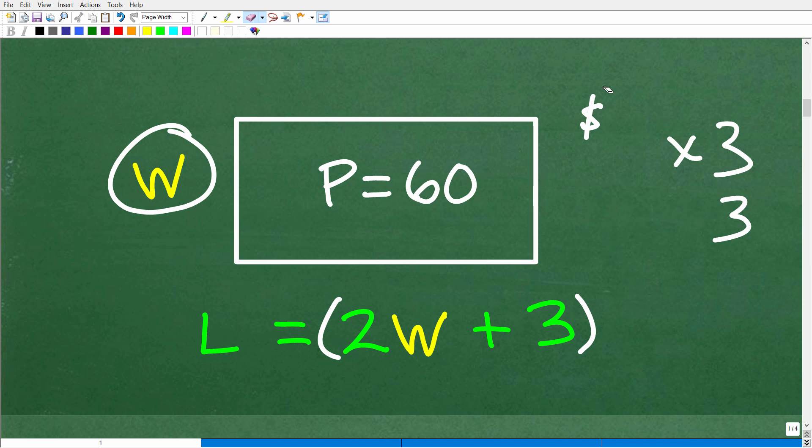Hopefully this makes sense. Now, this is the first part of figuring out this problem. The second part is that we have this information right here, which is going to be critical, that the perimeter of this rectangle is 60 units.